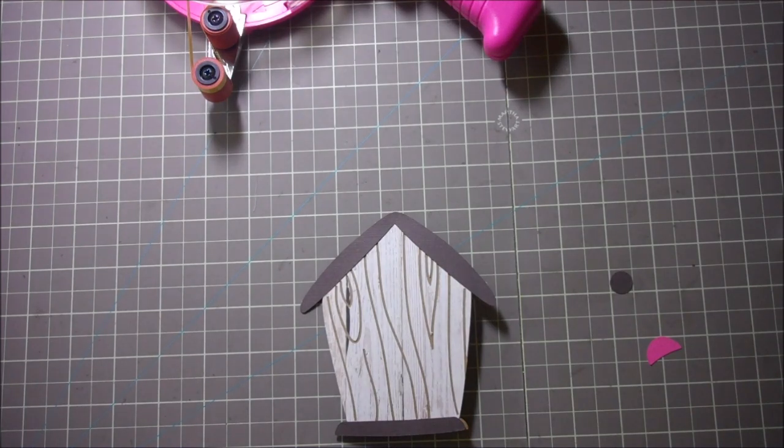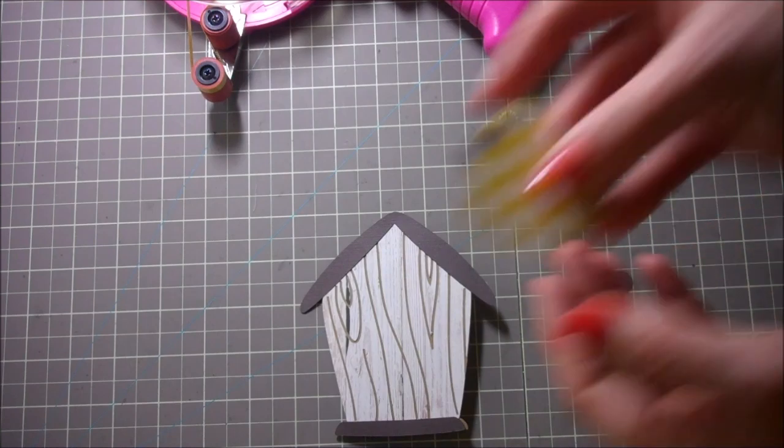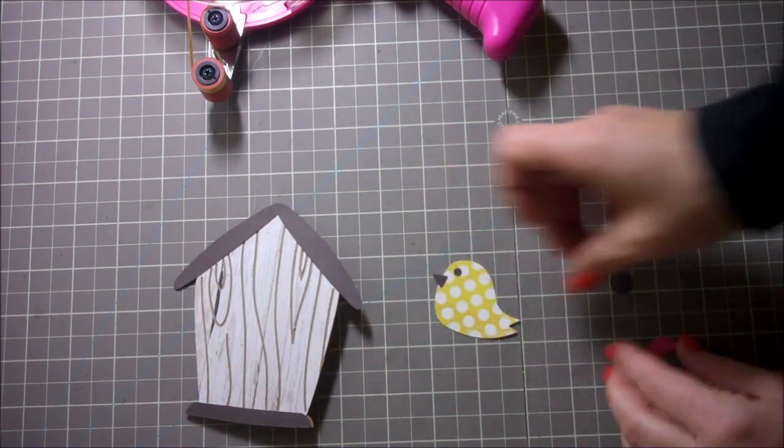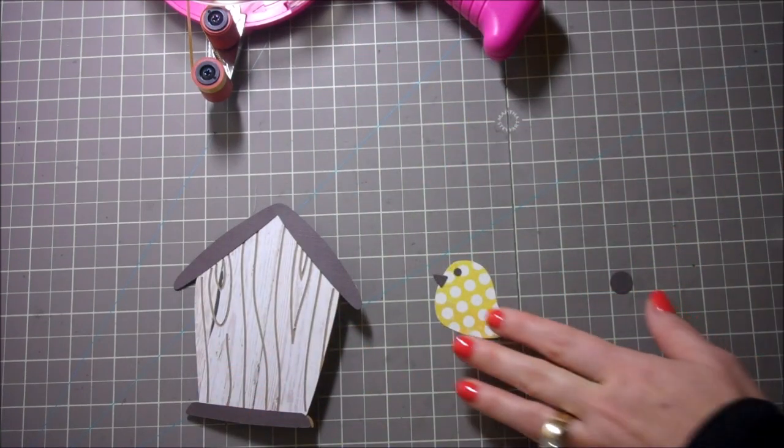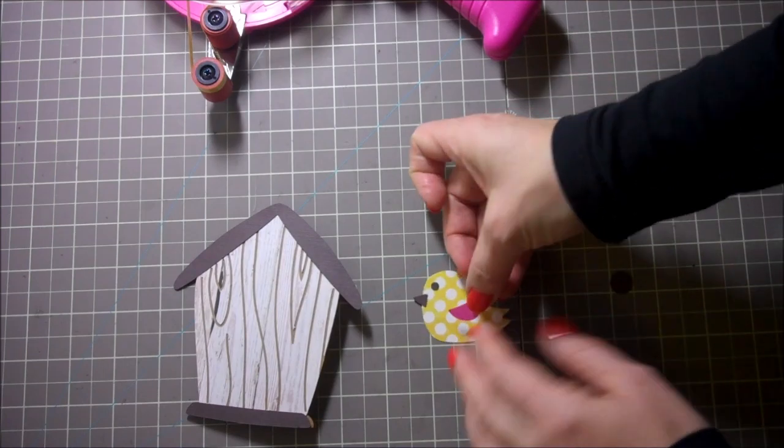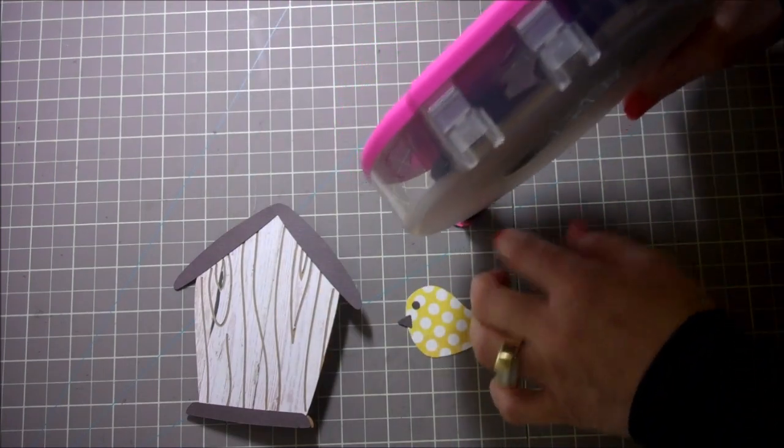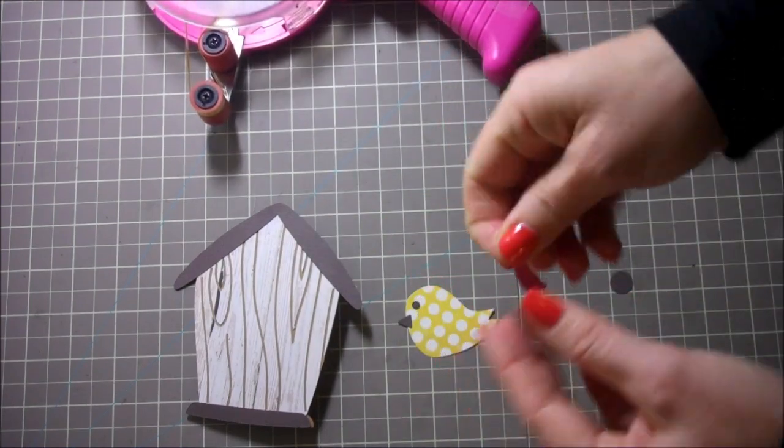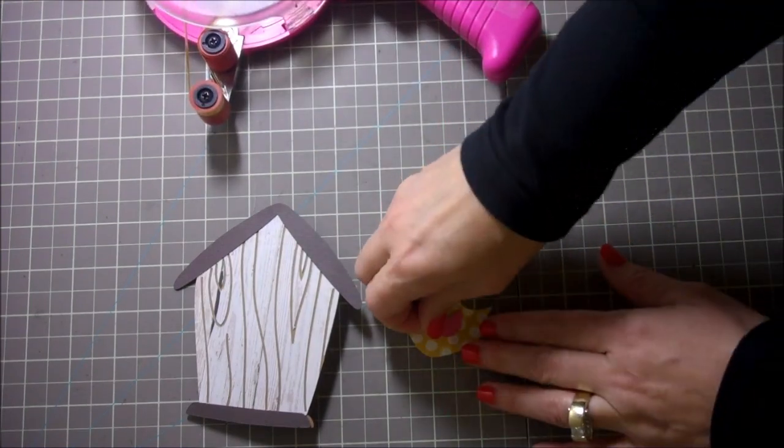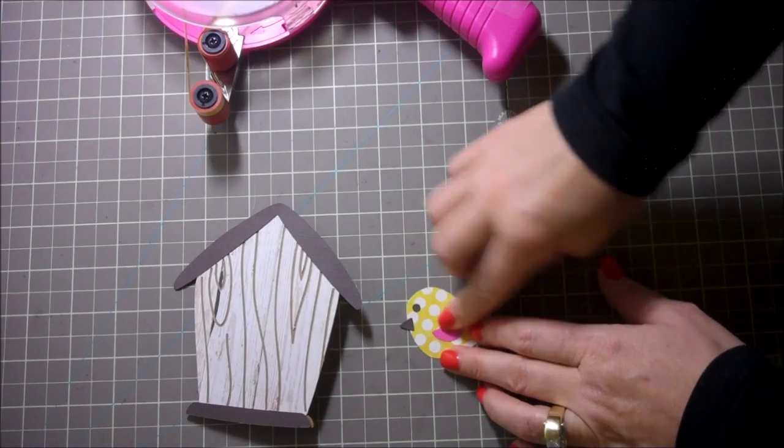Now I've got my little bird here that I've gone ahead and added the beak and added the eye. It does need a little bit of a wing done to it. I'm just going to add the little wing here. This should be fine just using this. You could use glue or this but I think this will be just fine.